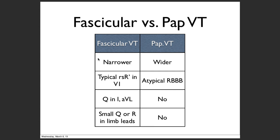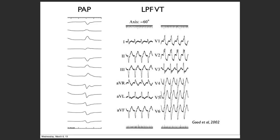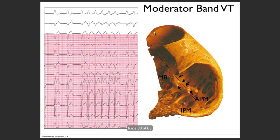An important differentiation is between fascicular VT and papillary muscle VT. In papillary muscle VT, there is no Q wave in lead 1 or AVL, whereas Q waves are mostly present in fascicular VT. Papillary muscle VTs are also mostly broad. To differentiate anterior from posterior fascicle VT, use the morphology in lead 1 and V1. Some VT origins can also arise from the moderator band.